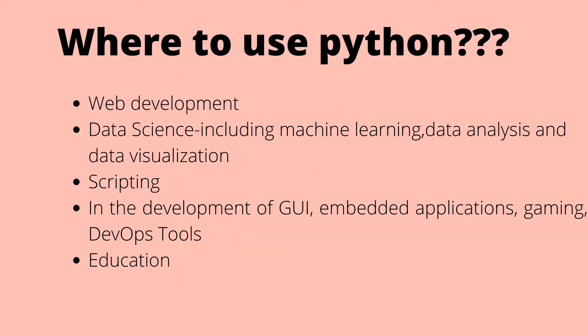So where can we use Python? Python is used in many web development frameworks. It is very widely used in scientific computing such as machine learning, data analysis, and data visualization. Python is a scripting language, so it is really efficient for prototyping. Python is also used in the development of graphical user interfaces, embedded applications, gaming, and DevOps tools. Python is easy to learn and is used for educational purposes as the first programming language for teaching.